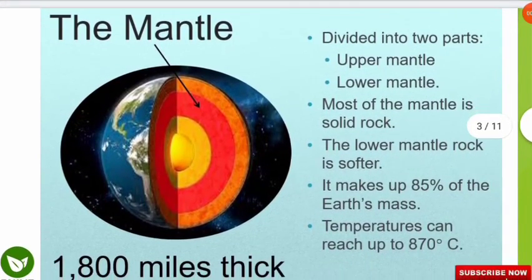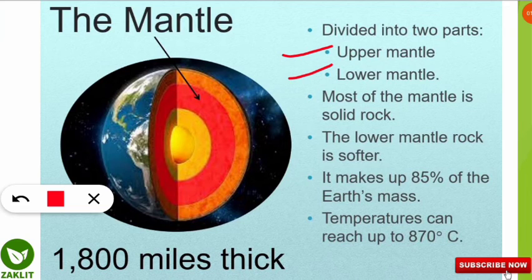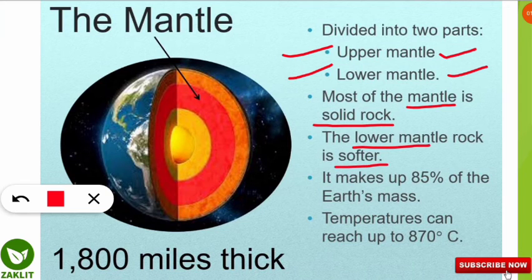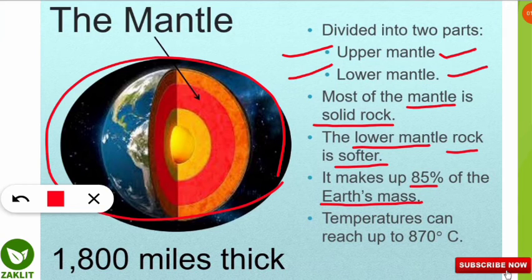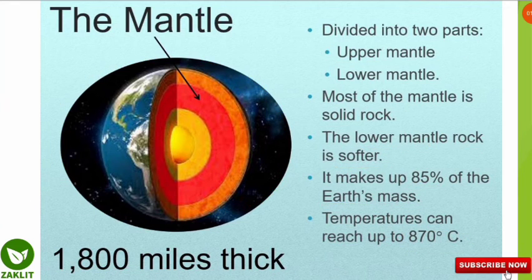So first, what is the mantle? It is divided into two important parts: upper mantle and lower mantle. Most of the mantle is composed of solid rock, whereas the lower mantle has softer rock compared to the upper mantle. This mantle portion makes up 85% of the earth's mass, and the temperature in this region can reach up to 870 degrees Celsius. The thickness of the mantle is on average 1800 miles.